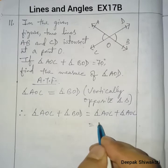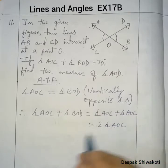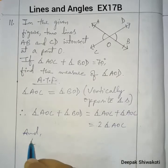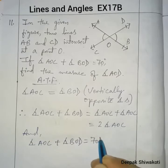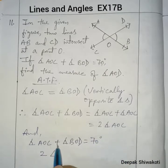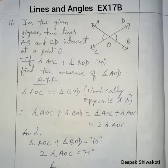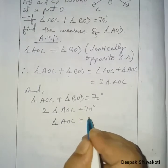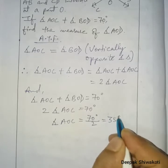So AOC plus AOC gives us 2 times angle AOC. And since angle AOC plus angle BOD equals 70 degrees, we get 2 times angle AOC equals 70 degrees. Therefore angle AOC equals 70 divided by 2, which is 35 degrees.